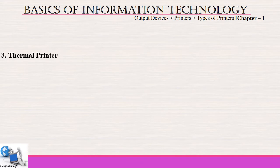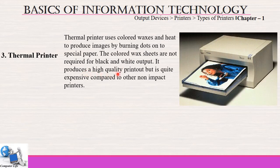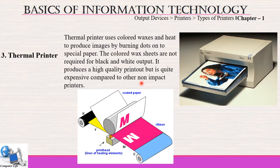The next type is thermal printer. Thermal printers use colored waxes and heat to produce images by burning dots onto special paper. The special paper is a colored wax paper; colored wax sheets are not required for black and white output. It produces high quality printout but is quite expensive compared to other non-impact printers because a very expensive wax is used to produce colored prints.